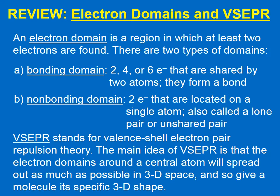Let's review electron domains and VSEPR. An electron domain is a region in which at least two electrons are found. There are two types of domains. Bonding domains have two, four, or six electrons that are shared by two atoms — they form a bond. A non-bonding domain is two electrons located on a single atom, also called a lone pair or unshared pair.